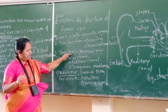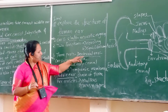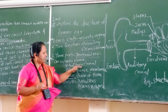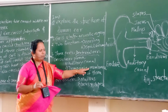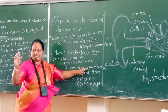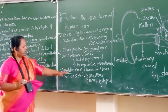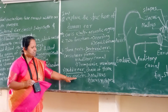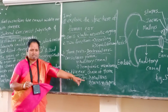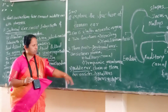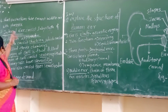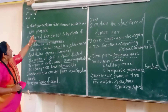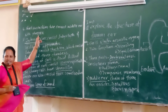Three parts: external ear consists of the ear pinna, auditory canal, and tympanic membrane — that is the ear drum. Middle ear consists of a chain of three ossicles: malleus, incus, and stapes. A short Eustachian tube connects the middle ear with the pharynx.